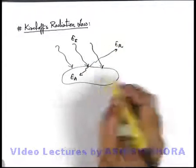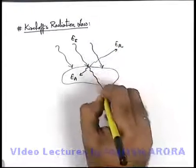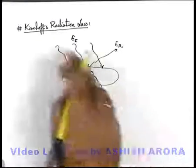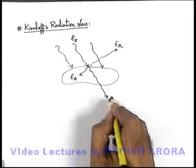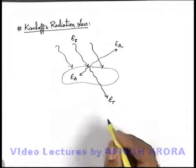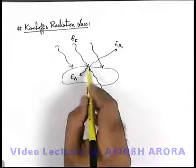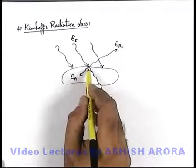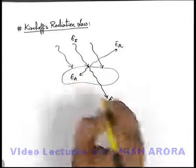And due to conduction or some other means, some energy is transmitted across the body, and this energy can be written as E_t. So we can state whenever some energy is incident, it is divided in three parts: one is the reflection, absorption, and transmission.